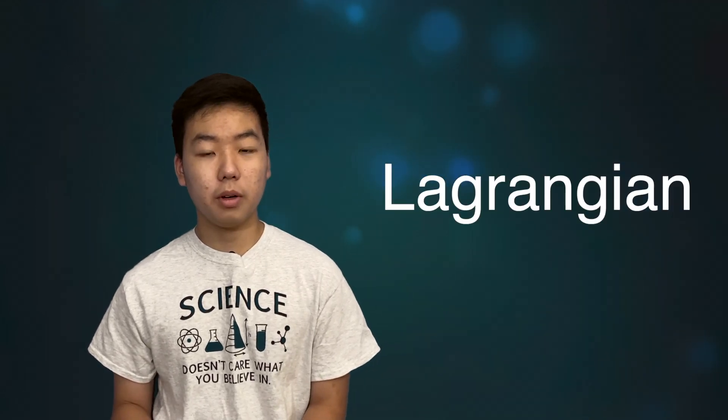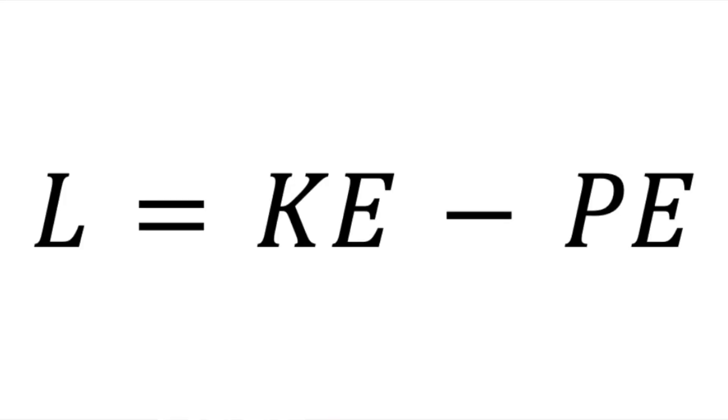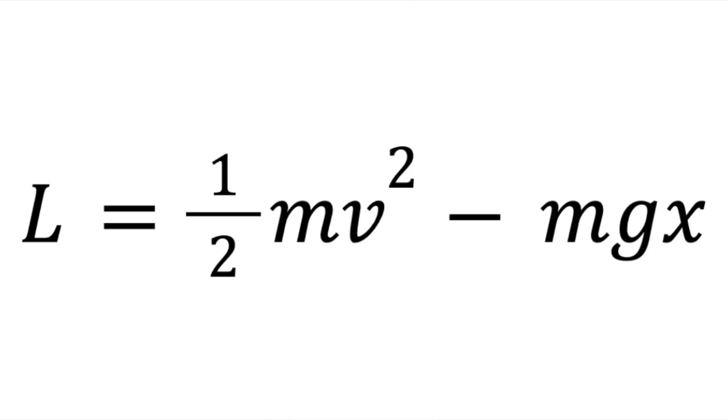In Lagrangian mechanics, we deal with Lagrangians, which are operators represented by the equation kinetic energy minus potential energy. To see how Lagrangian mechanics connects to Newtonian mechanics, let's look at an example of an object in freefall. Its kinetic energy is one-half mv squared, and its potential energy is mgx. Since we're in Lagrangian mechanics, we can describe this system by substituting this Lagrangian into what's known as the Euler-Lagrange equation.